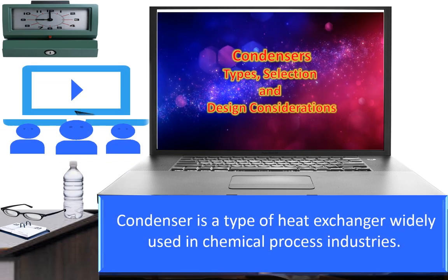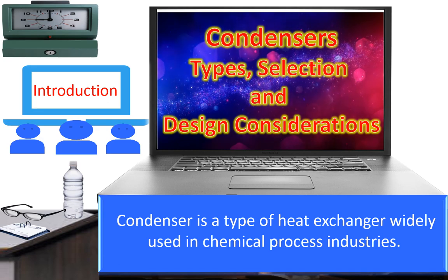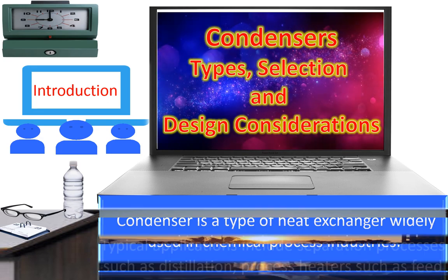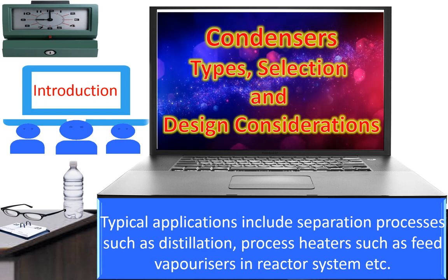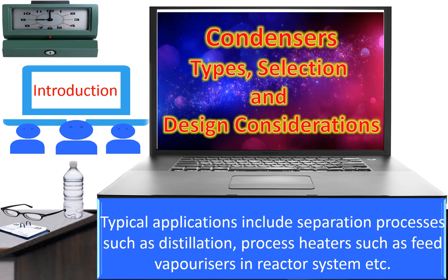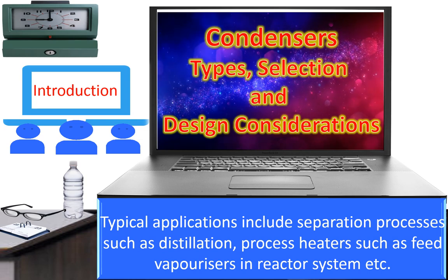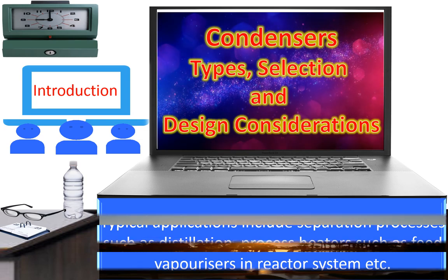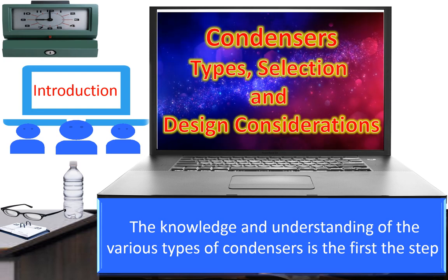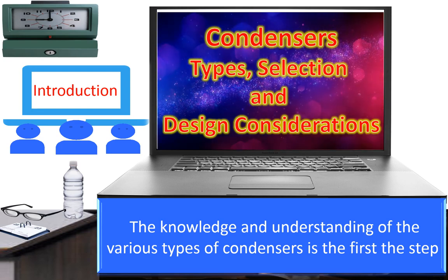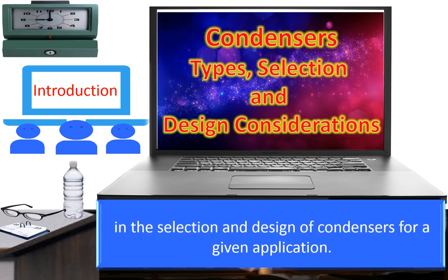A condenser is a type of heat exchanger widely used in chemical process industries. Typical applications include separation processes such as distillation, and process heaters such as feed vaporizers in reactor systems. Knowledge and understanding of the various types of condensers is a first step in the selection and design of condensers for a given application.